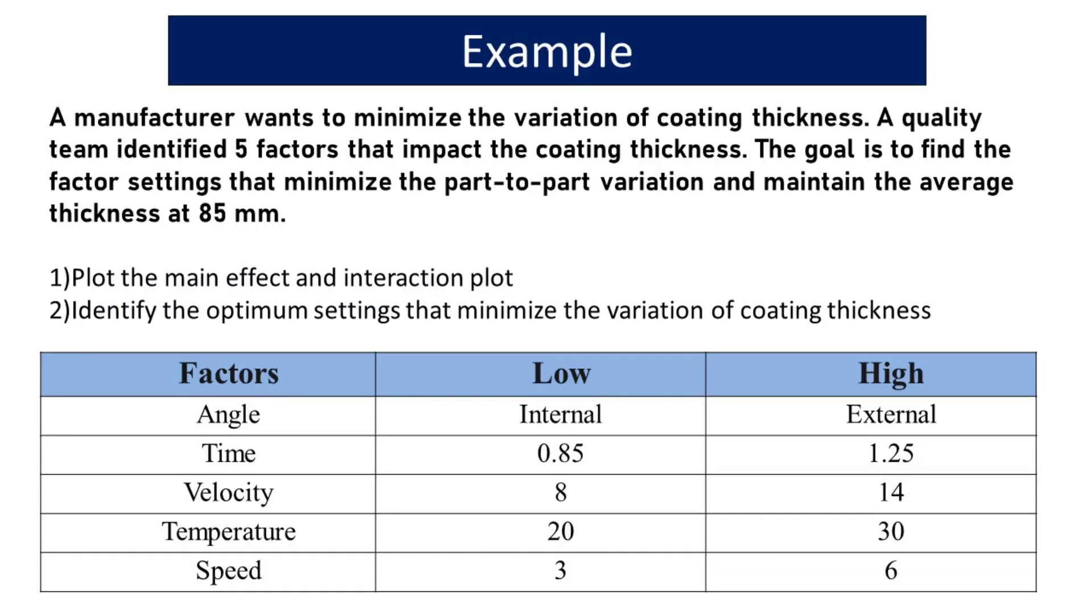A manufacturer wants to minimize the variation of coating thickness. A quality team identified five factors that impact the coating thickness. The goal is to find the factor settings that minimize the part-to-part variation and maintain the average thickness at 85 millimeters, plot the main effect and interaction plot, and identify the optimum settings that minimize the variation of coating thickness.